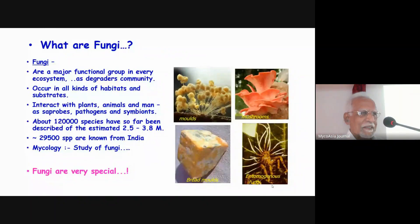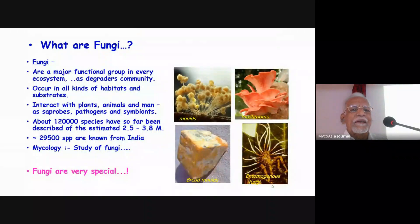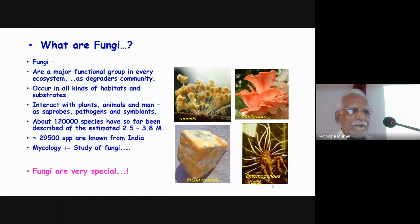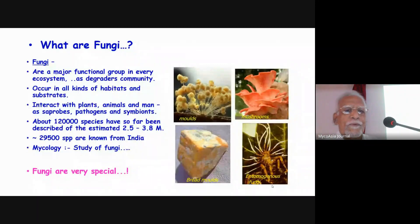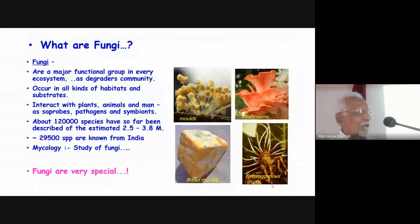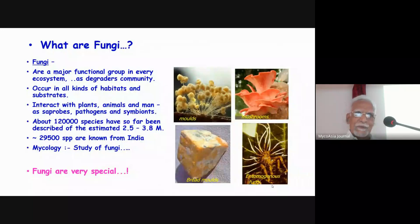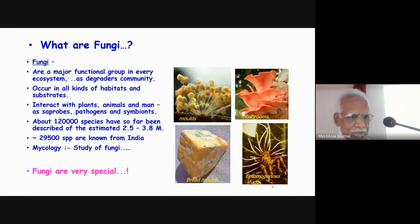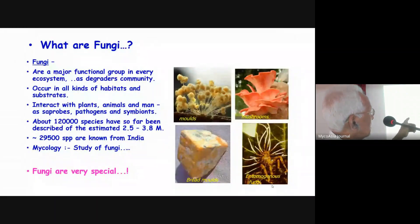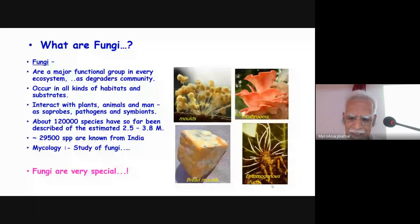You know these definitions from high school to college — we learn about fungi because this is one of the important components of the living world. Fungi are a major functional group in every ecosystem. Everything that we throw out has to be degraded, and along with bacteria, fungi are an important community to degrade organic substances. About 1,20,000 species have been described so far of an estimated 2.5 to 3.8 million, and approximately 30,000 species are known from India.